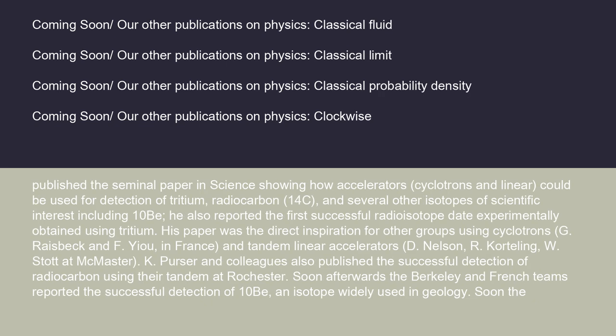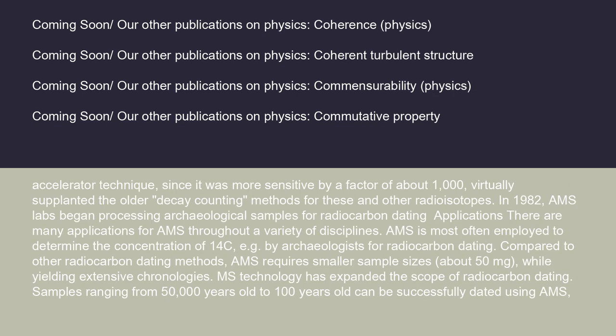He published a seminal paper in Science showing how accelerators — cyclotrons and linear — could be used for detection of tritium, radiocarbon 14C, and several other isotopes of scientific interest, including 10B. He also reported the first successful radioisotope date experimentally obtained using tritium. His paper was the direct inspiration for other groups using cyclotrons (G. Raysbeck in France) and tandem linear accelerators (D. Nelson, R. Cordeling, W. Stodd at McMaster). K. Purser and colleagues also published the successful detection of radiocarbon using their tandem at Rochester. Soon afterwards, the Berkeley and French teams reported the successful detection of 10B, an isotope widely used in geology. The accelerator technique, being more sensitive by a factor of about 1,000, virtually supplanted the older decay counting methods for these and other radioisotopes.